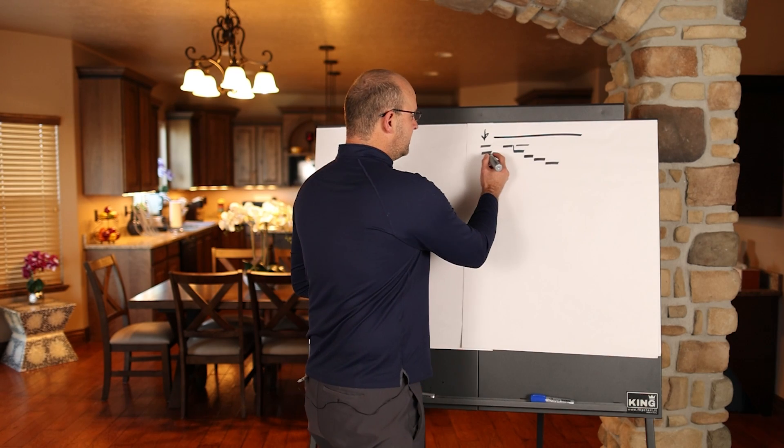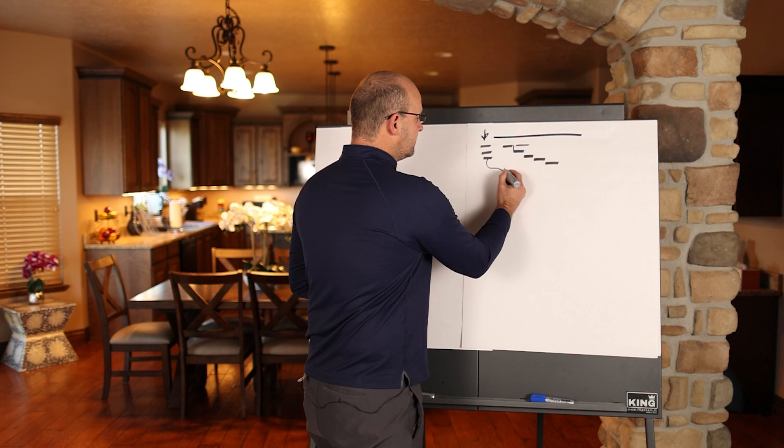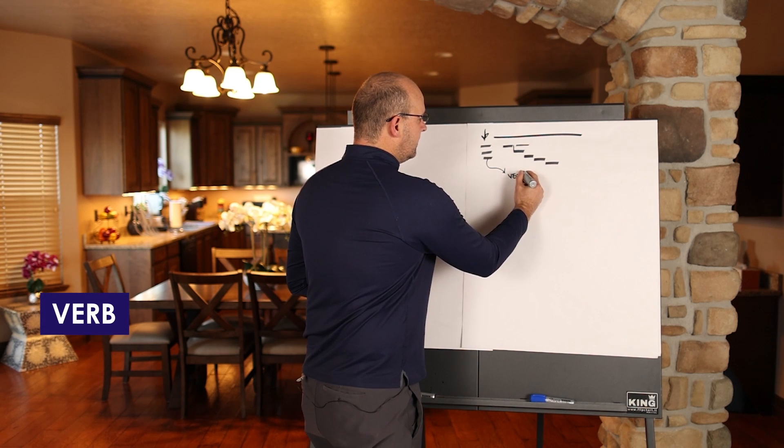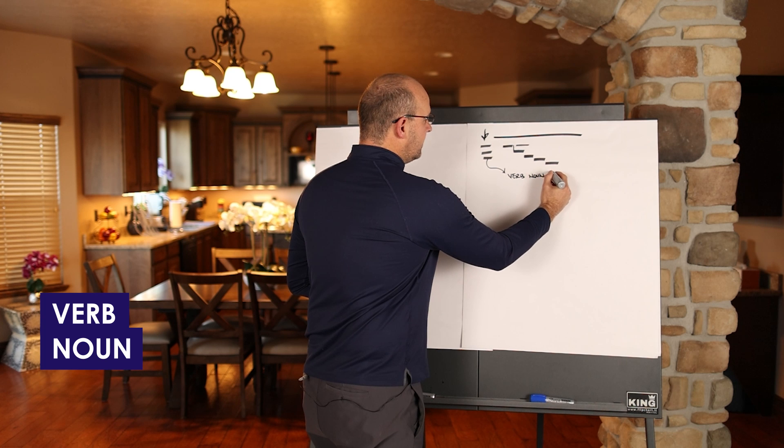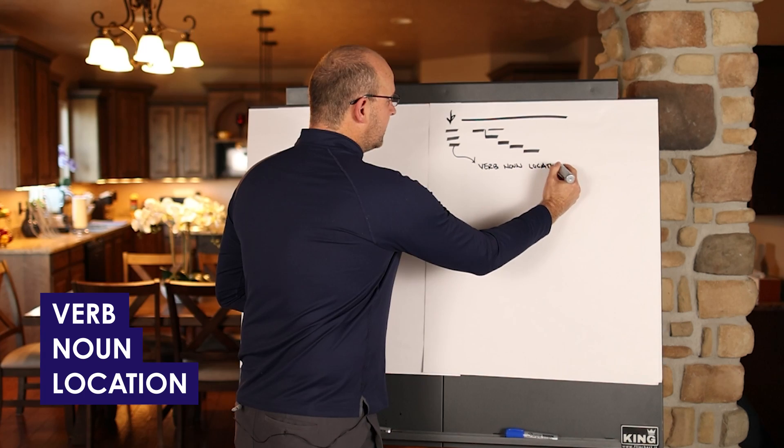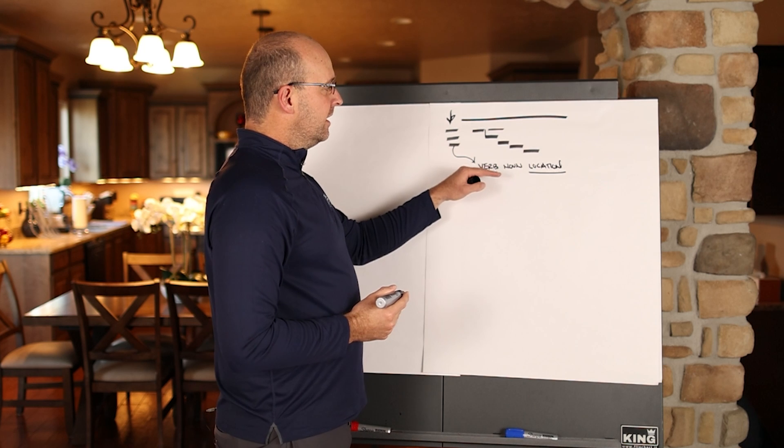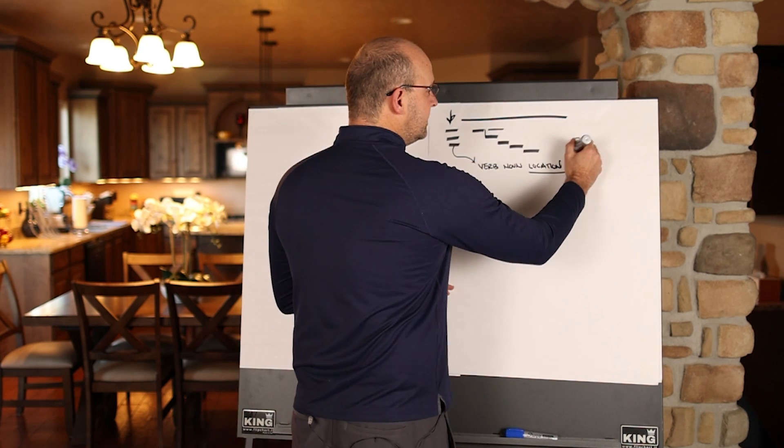The one thing that you want to remember with this is when you are naming this, you want to have the verb, the noun, and then the location. Because the location isn't consistent in the format, again, this is only a 2D schedule.